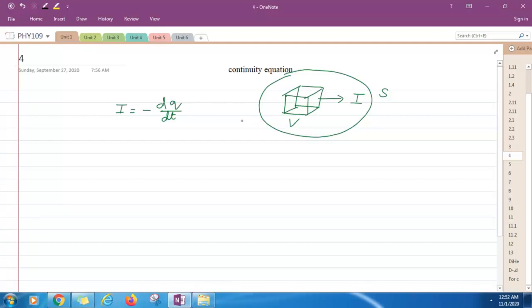That is, charge is neither being created nor lost. What is I? I is equal to minus dq upon dt.